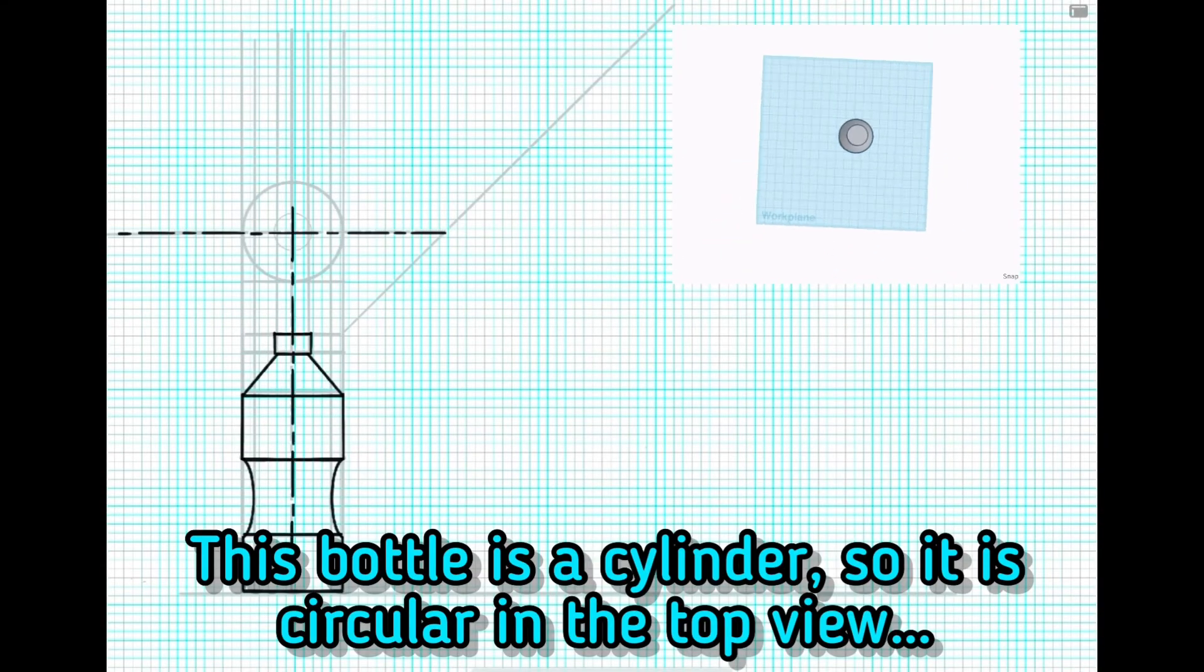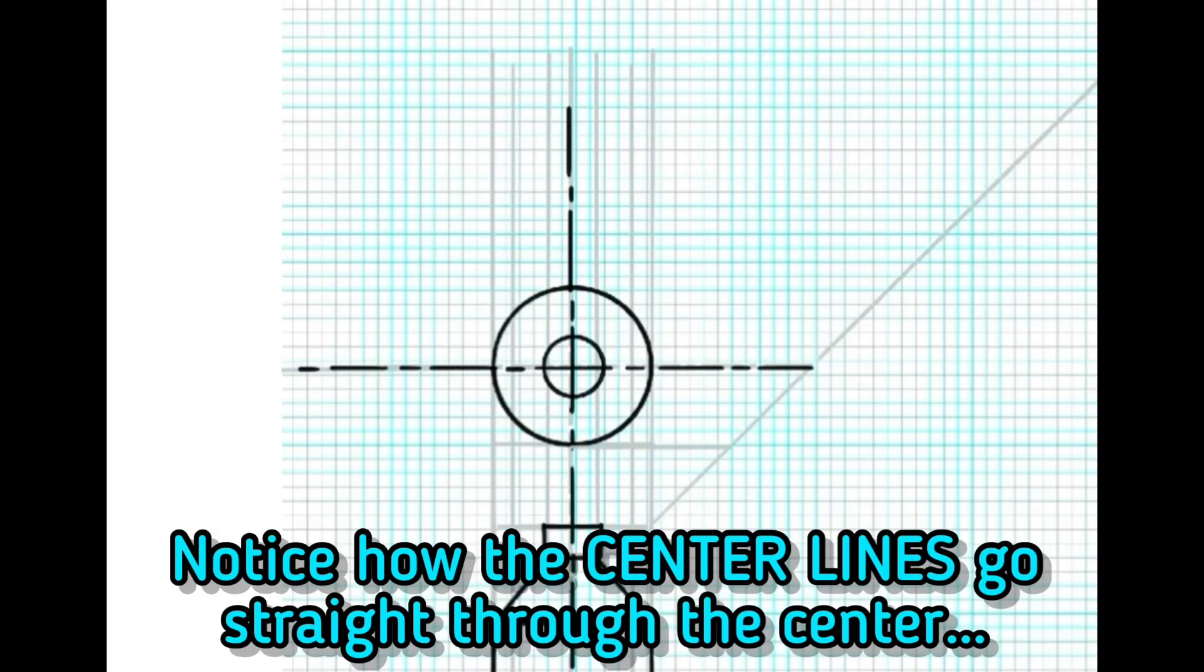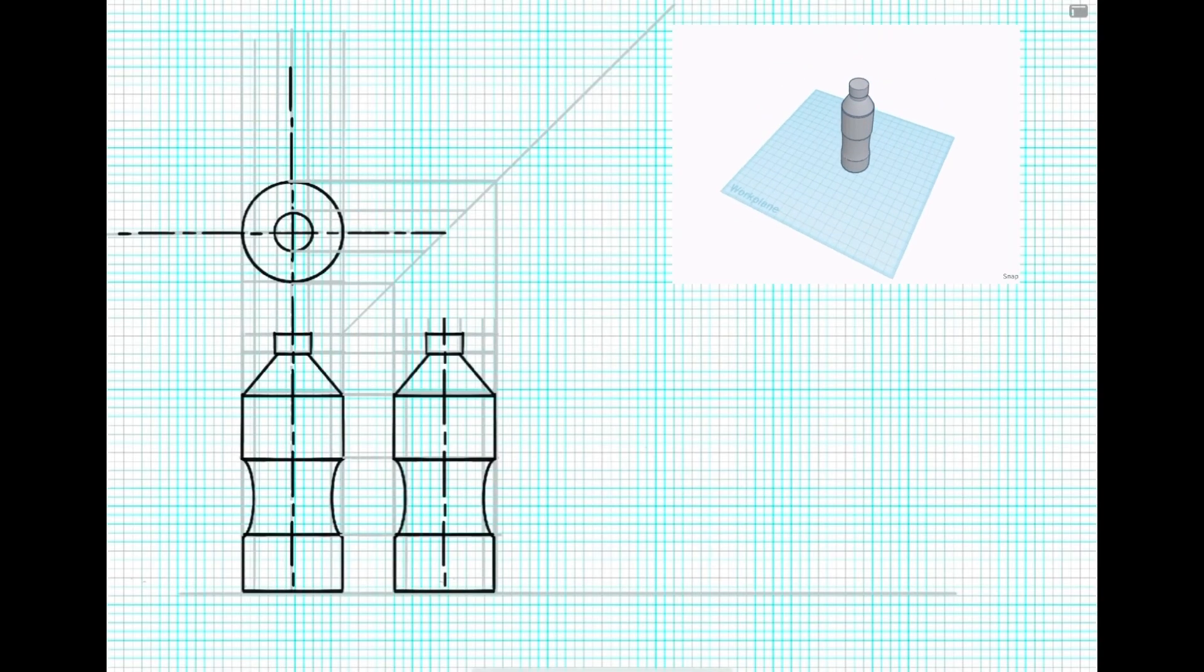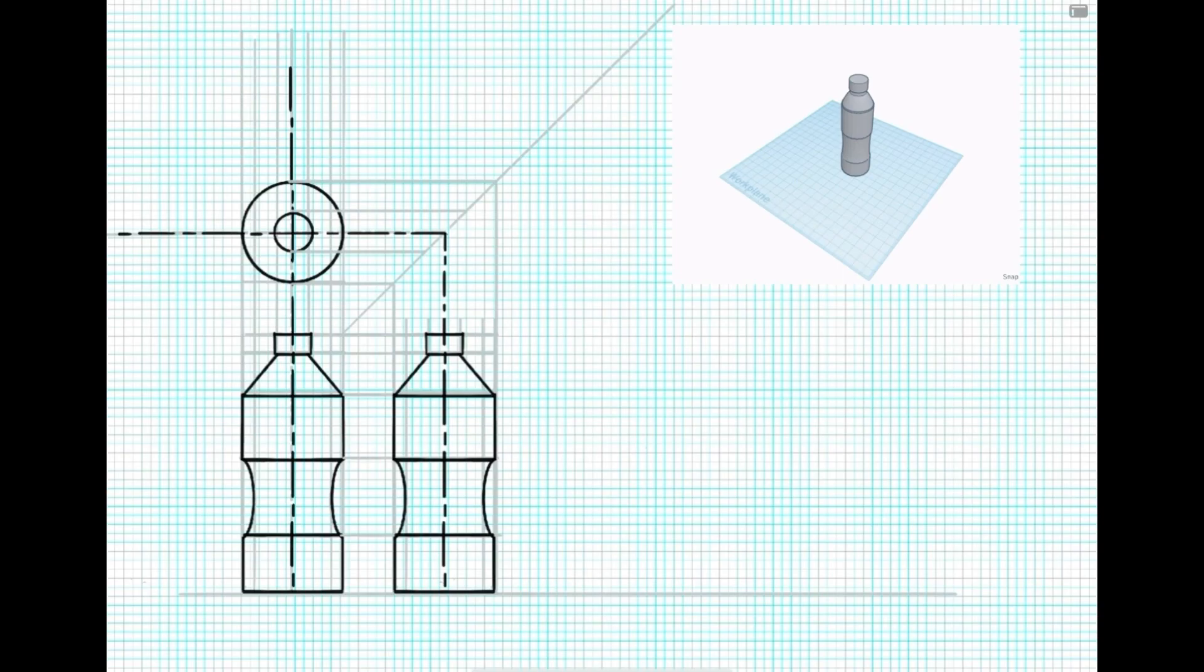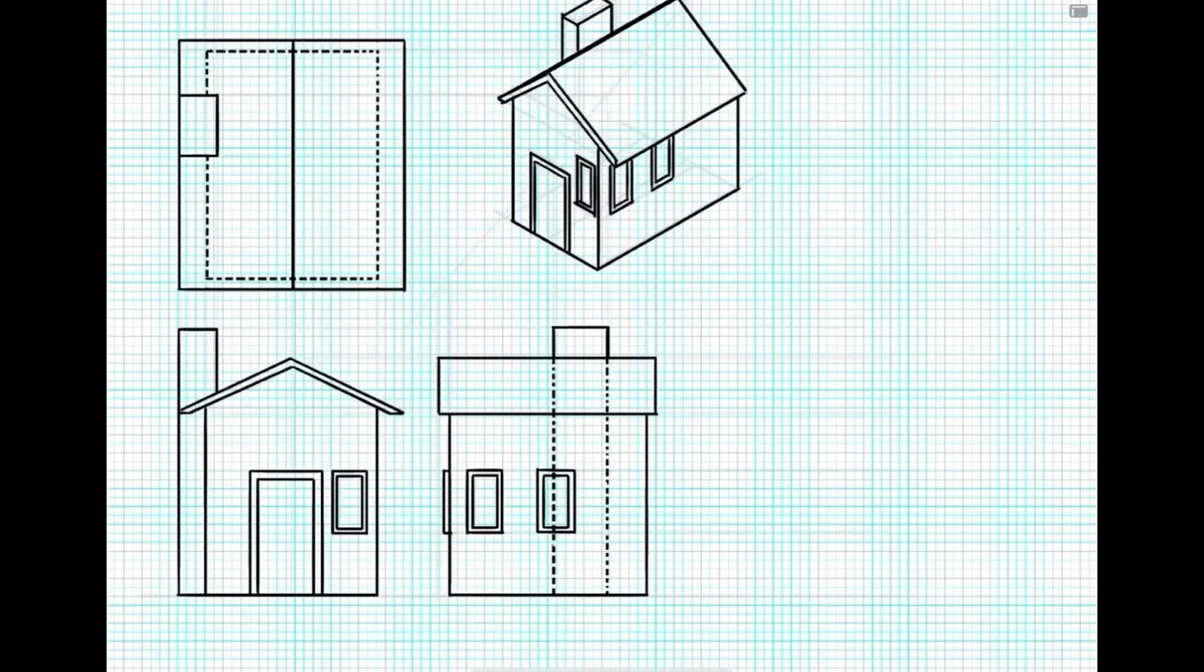This bottle is a cylinder, so it is circular on the top view. Notice how the center lines go straight through the center. Get drawing!